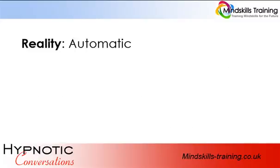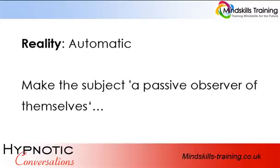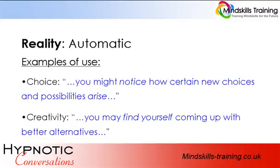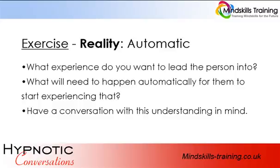Reality — automatic. When we do hypnosis, it's useful to make certain actions or thoughts happen by themselves. The easiest way to create this often involves making the subject a passive observer of themselves. This is easier to achieve than it may seem, and it's a great way to make suggestions easier for your hypnotic subject to act upon. Examples: Choice: 'You might notice how certain new choices and possibilities arise.' Creativity: 'You may find yourself coming up with better alternatives.' Sales: 'Have you ever noticed how some decisions just seem to make themselves?' Exercise: decide what experience you want to lead the person into, what will need to happen automatically to start experiencing that, then have a conversation with this understanding in mind.